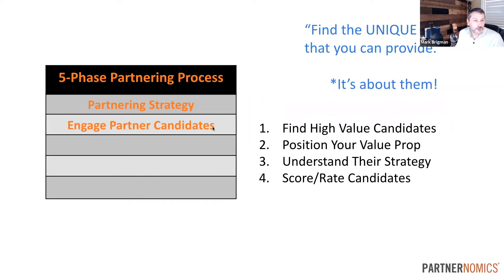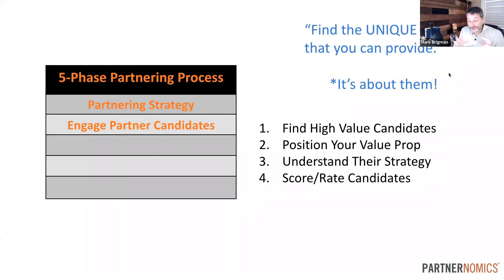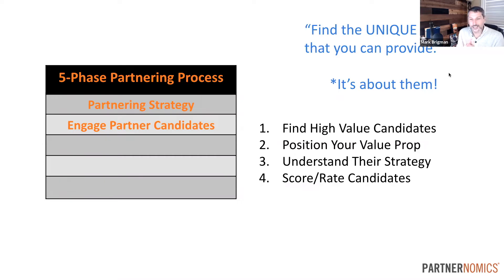Let me step into the second piece: phase two — engage partner candidates. Find the unique value that you can provide. As you reach out to your potential partners, you're figuring out who's a good fit. The more transactional and commodity-based the partnerships are, if the only thing you can do is what everybody else can do, then by definition you're probably not going to be quote-unquote strategic for your partner. I challenge people to think: what can your company provide that is unique and a value-add for potential partners? The more unique you are, the more power you have, the more they would need you.